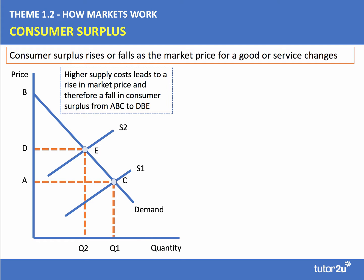After the price rise, consumer surplus is area DBE; beforehand it was ABC. Therefore there's a loss of consumer surplus — you can see that the lost area is ADEC. Higher prices caused by, for example, cost-push inflation can erode or reduce the level of consumer surplus.